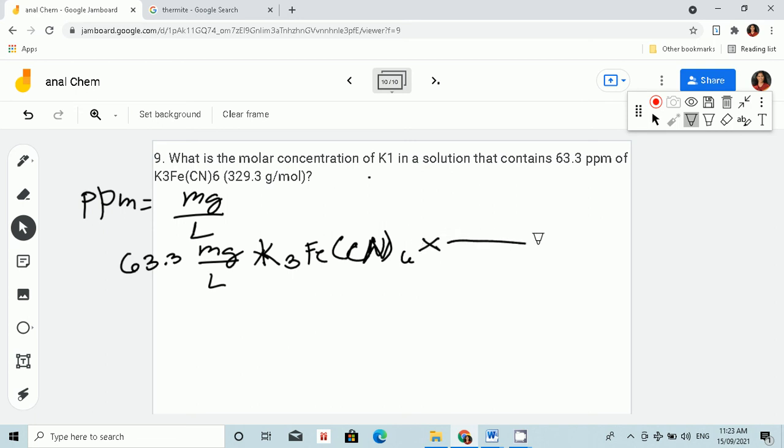So let's convert milligrams to grams first. 1,000 milligrams is equal to 1 gram. So that's good, we are good.